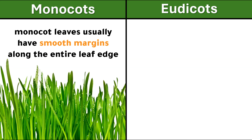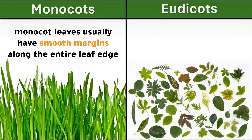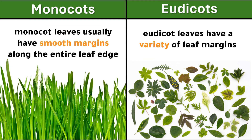Monocot leaves usually have smooth margins along the entire leaf edge. Eudicot leaves have a variety of leaf margins.